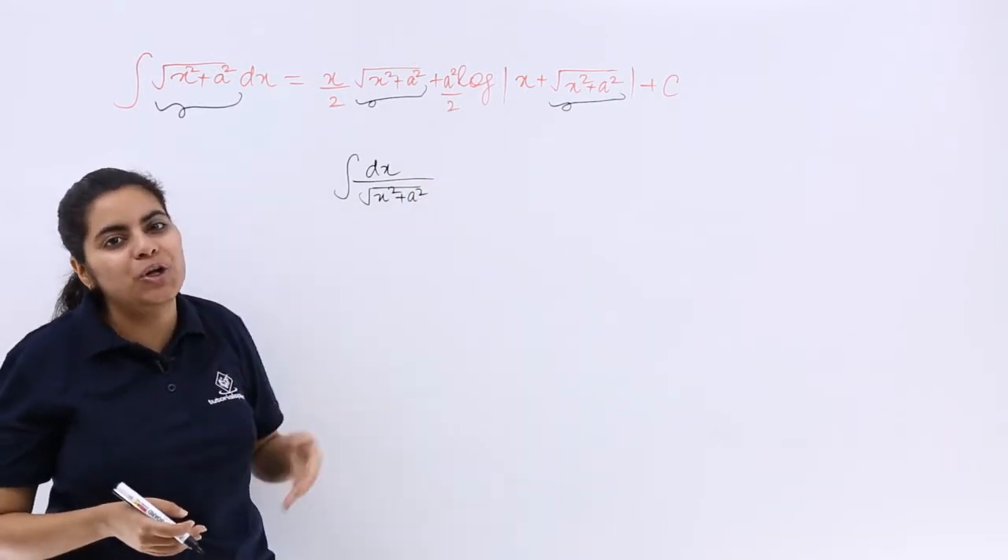Here it was x square plus a square under root in the denominator. That formula is different, this formula is different. So wherever the application of this formula would be there, you'll be using the above one and wherever the application of this formula would be there, you know what to use as in the previous videos we saw.